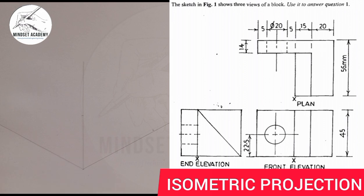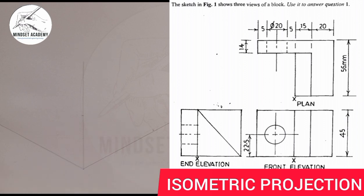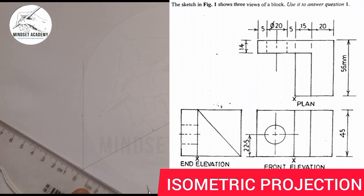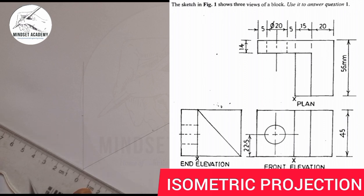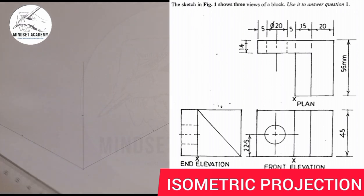Remember: the height is gotten from the front elevation, and the length is also gotten from the front elevation and the plan. The next thing is the width. The width is gotten from the plan and is given as 56. Measuring from zero to 56 — you can see that.